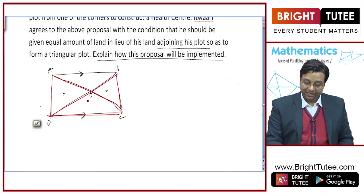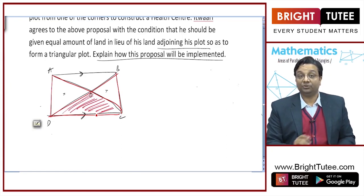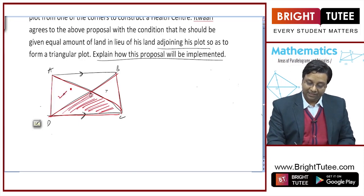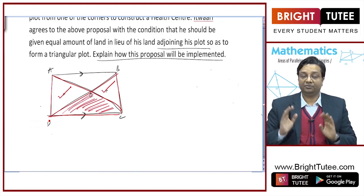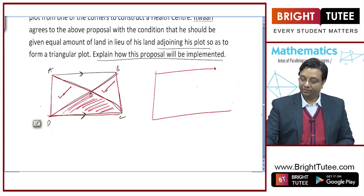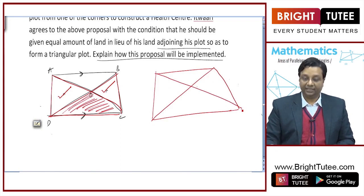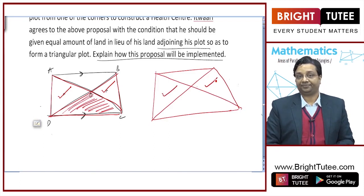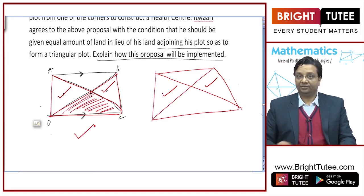So these areas are equal. If I subtract the common area from these two equal areas, I will get this area equal to this area — that is, area of AOD is equal to area of BOC. So whenever there is a situation where I have got two parallel lines and two non-parallel lines and I draw two triangles like this, these two triangles will have equal areas.